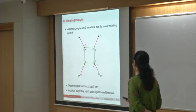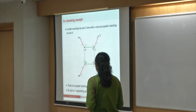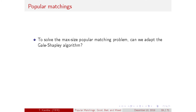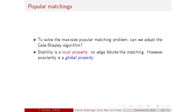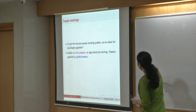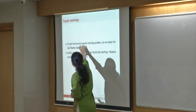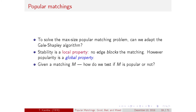Why not adapt the Gale-Shapley algorithm? One roadblock is that stability is a local property — edge by edge, we check for blocking edges — whereas popularity is a global property: something in one corner of the graph could affect popularity in another corner. More basic questions arise: given a matching, how do we test it doesn't lose an election to any rival? And how do we check that no larger matching is popular?